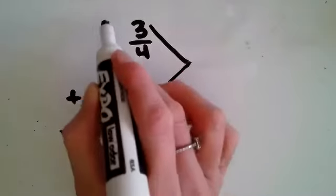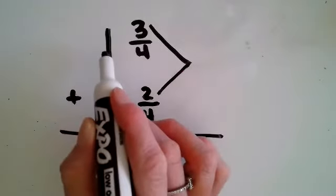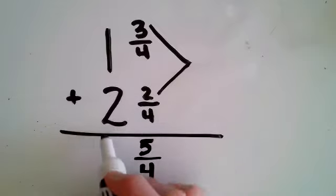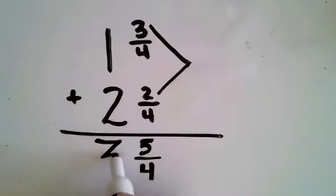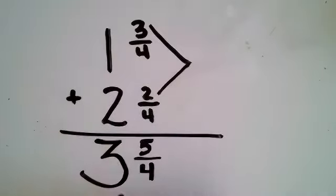One plus, now I'm going over to my whole numbers. One whole plus two wholes is three wholes. One plus two is three.